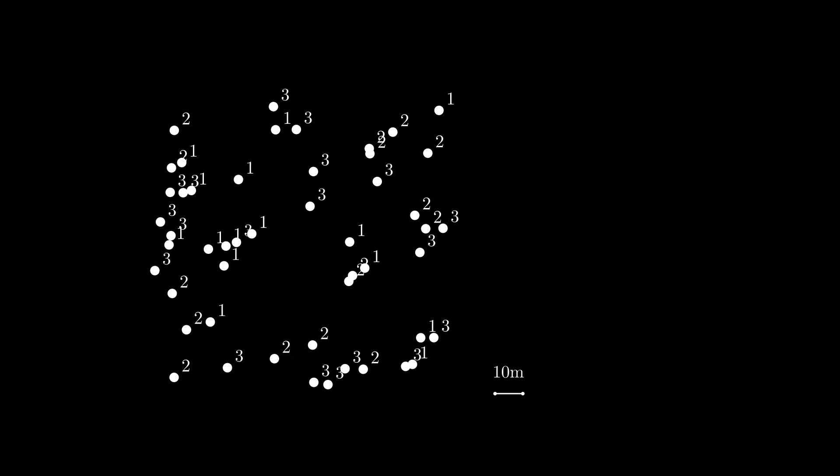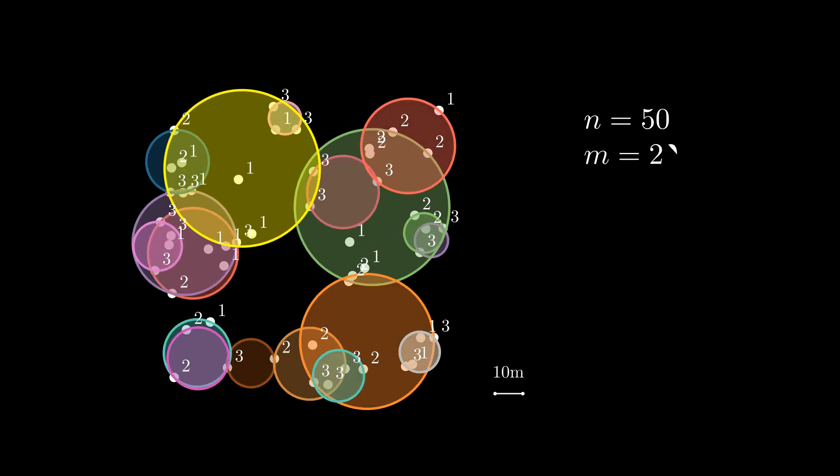These plots show the optimal minimum area solution for n equals 50 targets and m equals 20 disks, where each target must be covered a specified number of times, as indicated in white text next to the target dots.